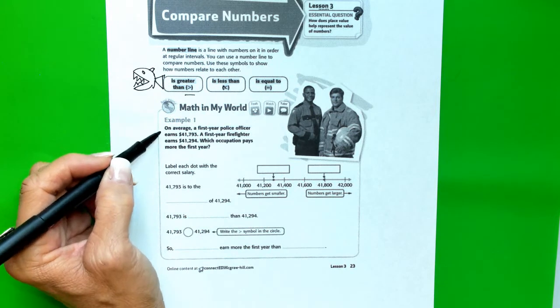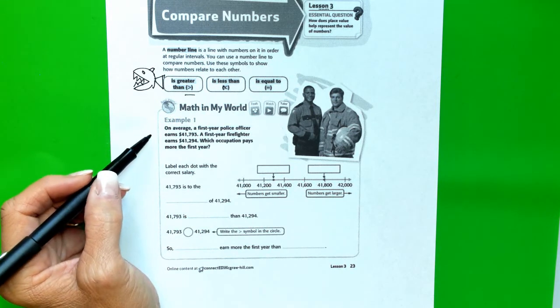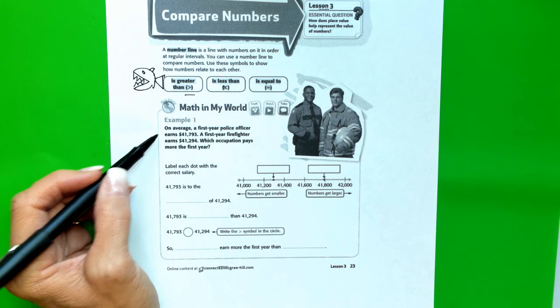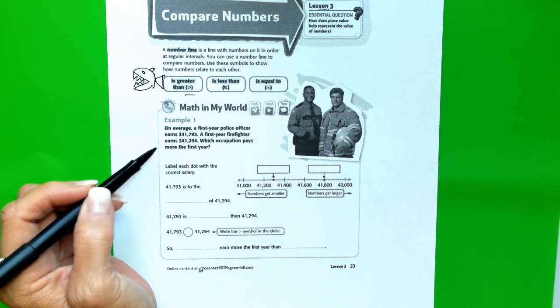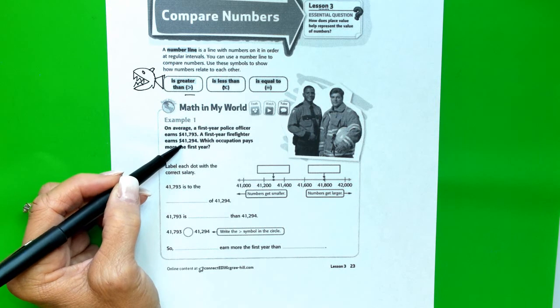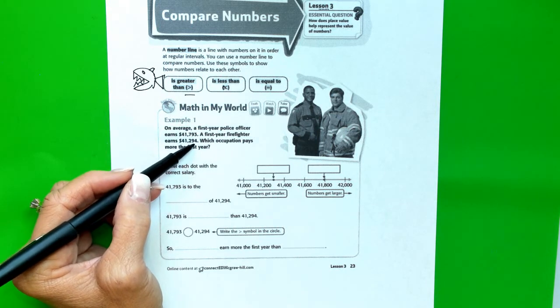So let's look at example number one. It says, on average, a first-year police officer earns $41,793. A first-year firefighter earns $41,297.94.